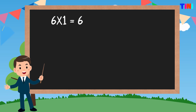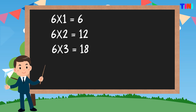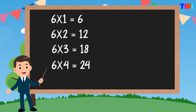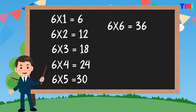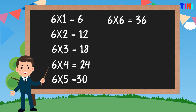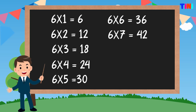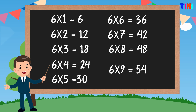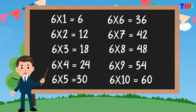6 ones are 6. 6 twos are 12. 6 threes are 18. 6 fours are 24. 6 fives are 30. 6 sixes are 36. 6 sevens are 42. 6 eights are 48. 6 nines are 54. 6 tens are 60.